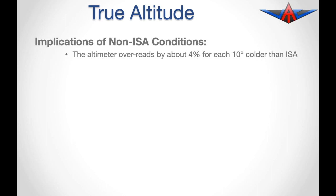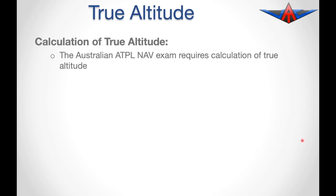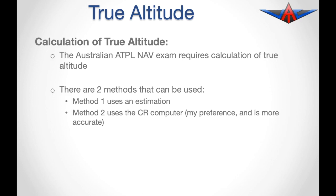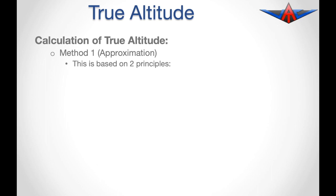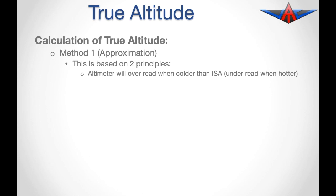The altimeter error is around 4% for every 10 degrees that you are colder than ISA. In the Australian ATPL navigation exam, you are required to calculate true altitude for given conditions using two methods. The first is an estimation, the second uses the navigation computer — which is more accurate and preferred. The approximation method is based on two principles: the altimeter over-reads when colder than ISA and under-reads when hotter than ISA, applying a correction of 4% for every 10 degrees of ISA deviation.